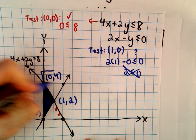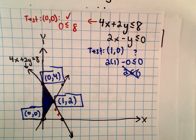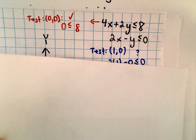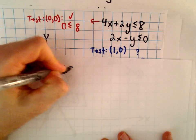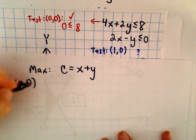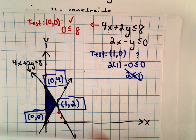So now we simply need to take these three points, put them into the function that we were trying to maximize, and determine which of those gives us our largest value. So we've got C equals, we want to maximize C equals x plus y. And we've got the points 0, 0, 0, 4, and the other one was 1, 2.